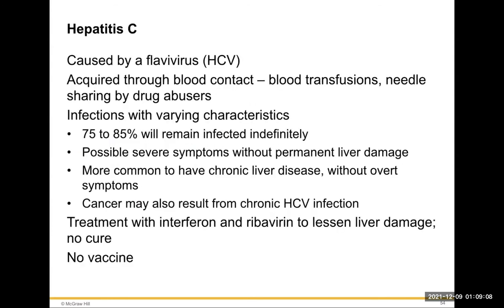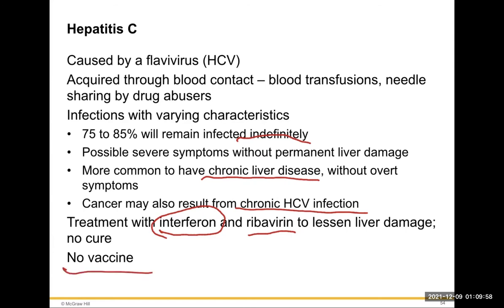Hepatitis C is caused by the flavivirus. It is acquired through blood contact — blood transfusions and needle sharing by drug abusers. Infection is very characteristic: 75–85% remain infected indefinitely throughout life, carrying the hepatitis C virus. Some have symptoms without permanent liver damage; more commonly, chronic liver disease results. Cancer has also been linked to chronic hepatitis C infection. Treatment uses interferon — an antiviral drug — and ribavirin to lessen liver damage, but there is no cure and no vaccine for hepatitis C. We do have a vaccine for hepatitis B but not hepatitis C.